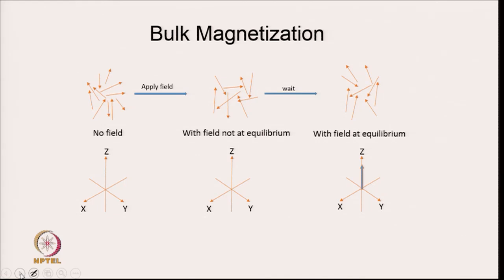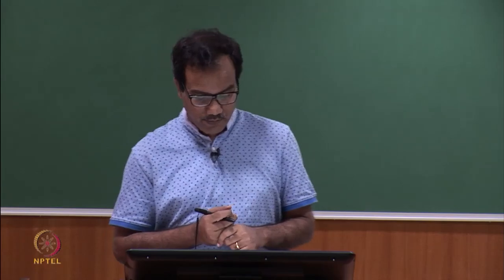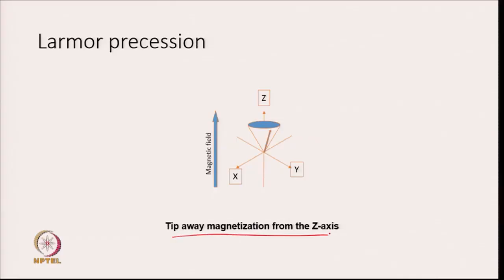What is happening is that if there is no field, the spin magnets are in random directions. But when you apply a field in the Z direction, after some time the bulk magnetization will be in the Z direction. Since spins are in a random state before application of the magnetic field, bulk magnetization is zero. But when you apply a magnetic field in the Z direction, you will get a bulk magnetization in the Z direction — this is the net effect of the external magnetic field.